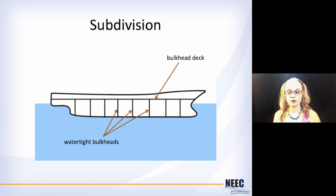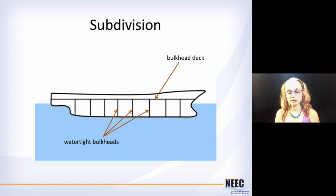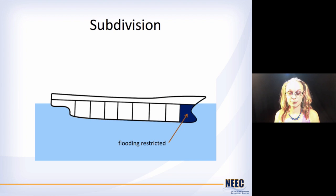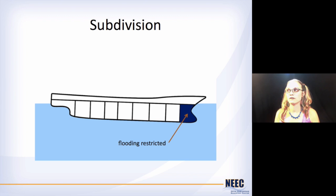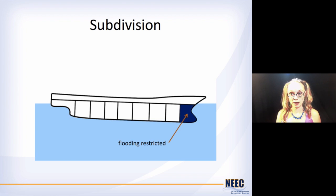Recall from one of our previous videos that we were talking about subdivision. Subdivision is just when you take the hull of your ship and you break it apart into compartments. The reason being is that in case something happens to your ship and one of these compartments floods, you can restrict it to just that one compartment, or maybe the one next to it if you actually managed to take out a bulkhead. This means you can restrict the flooding and hopefully give your people time to get off the ship onto lifeboats, and hopefully keep the ship upright, safe, and stable.